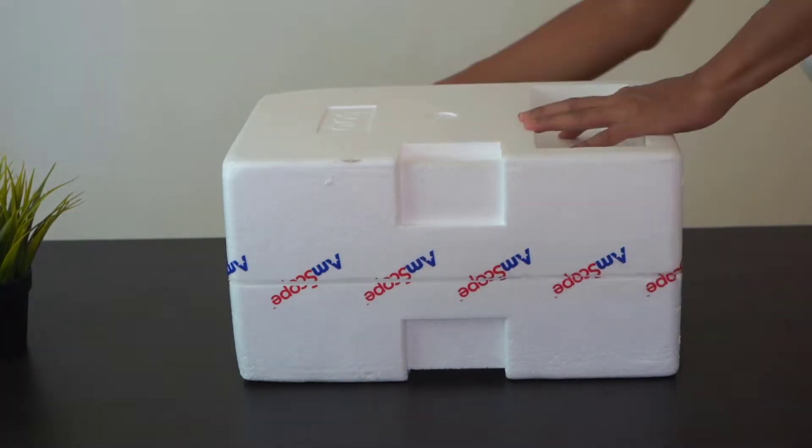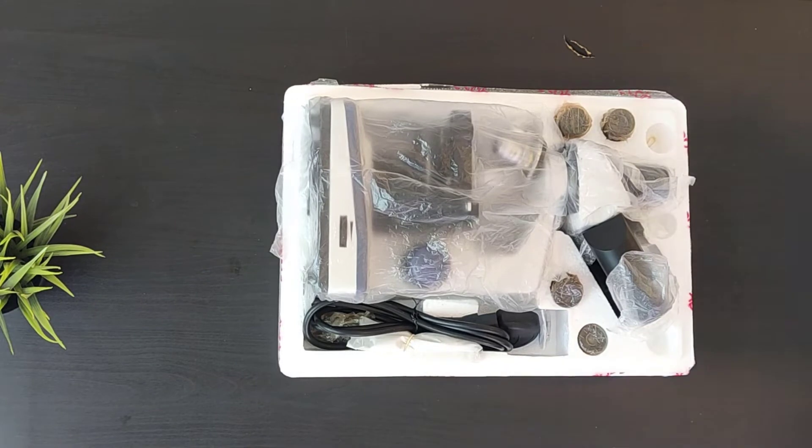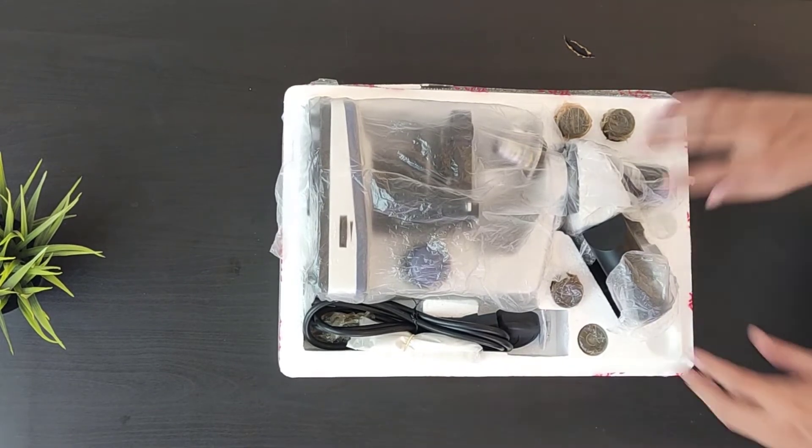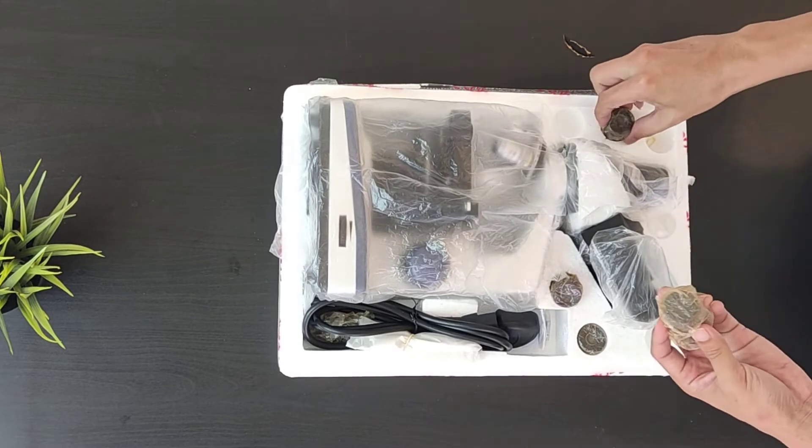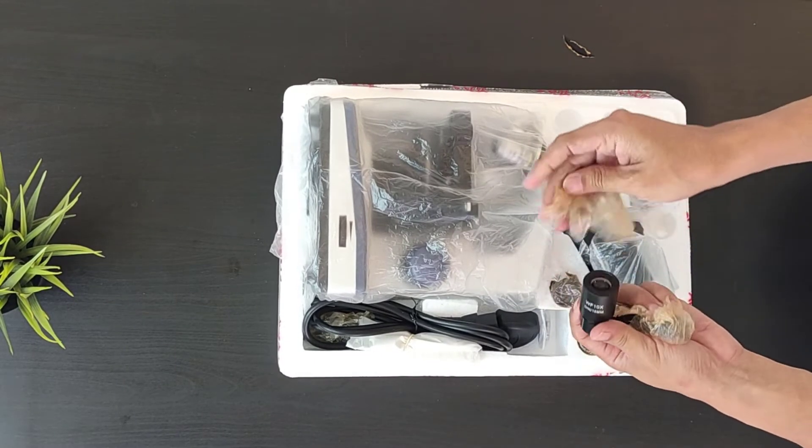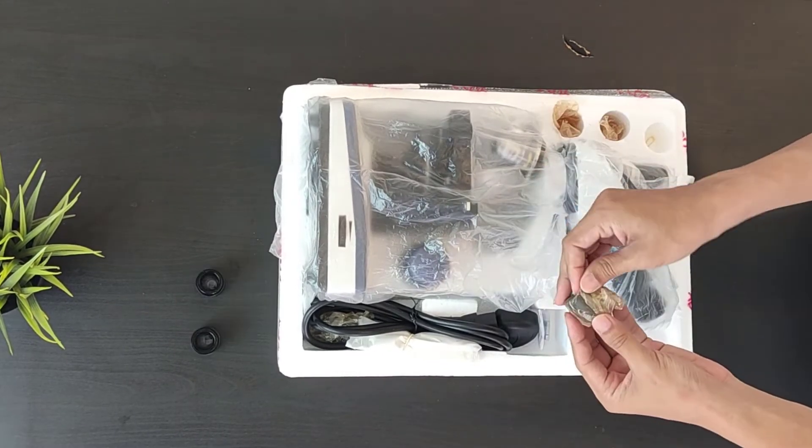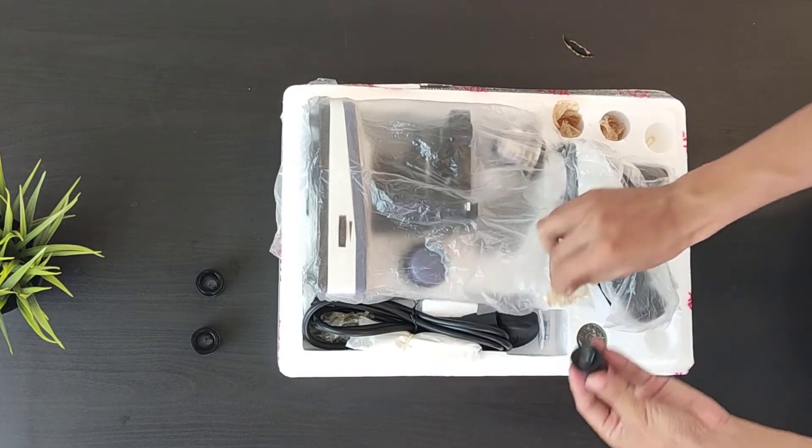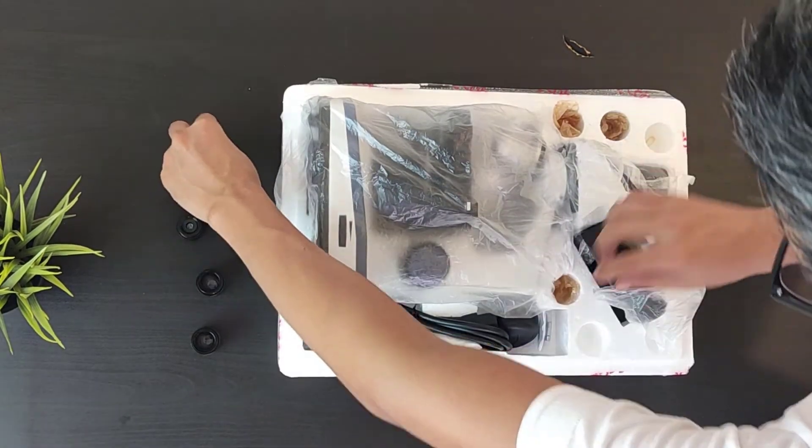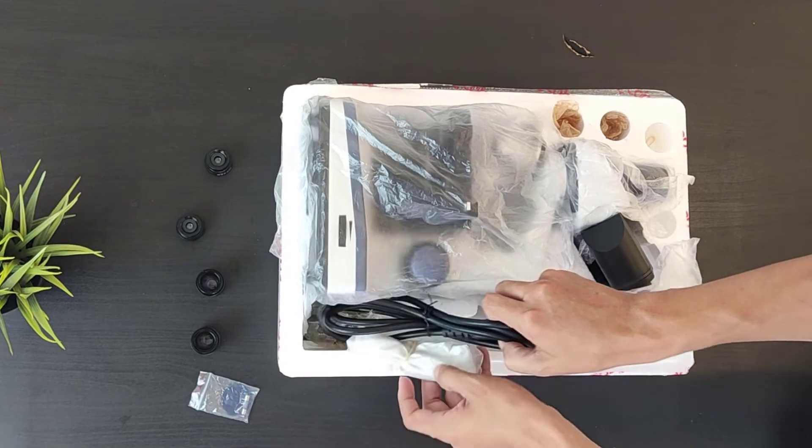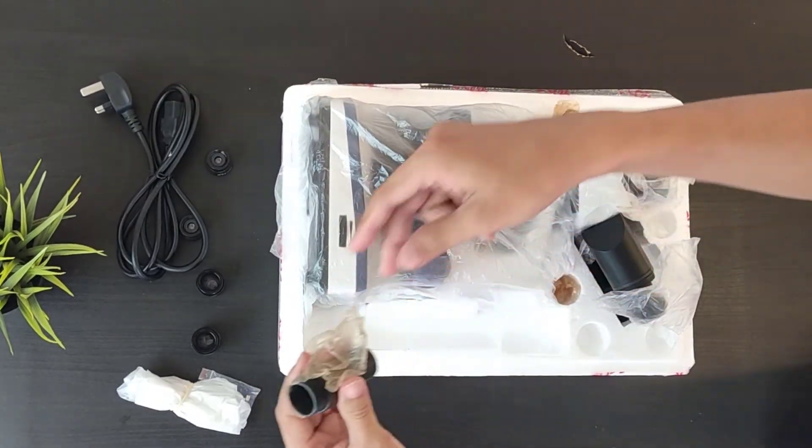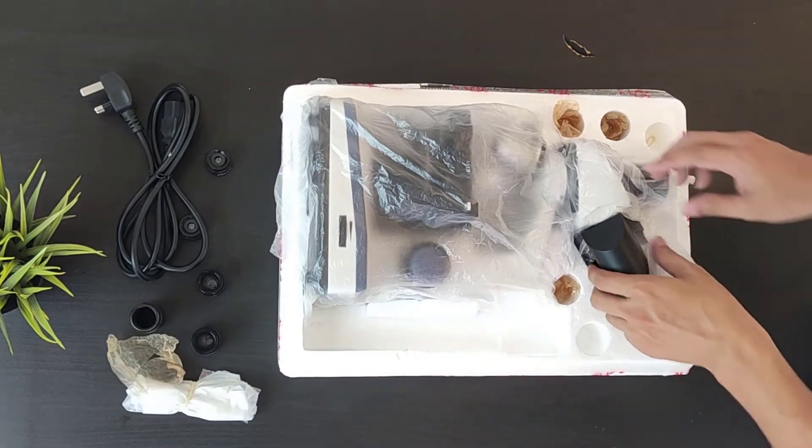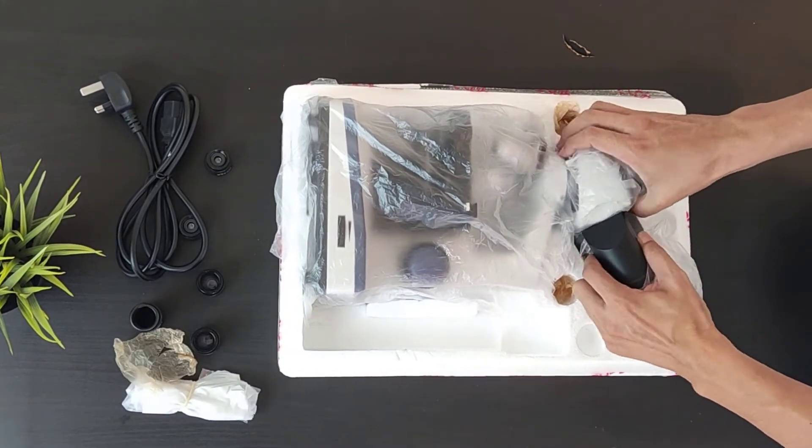So what you receive may be different depending on which model you bought. The T120C has a pair of 10x eyepieces and a pair of 25x magnification eyepieces. It also comes with a blue filter, a power cord, and also a trinocular head. Now let's try to assemble the microscope.